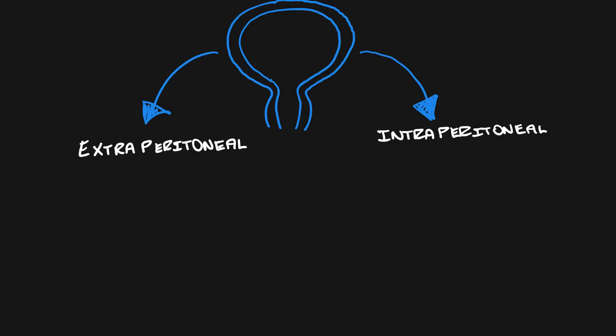The patient would present in quite a similar way, so it would be a trauma patient complaining of suprapubic pain, possibly with hematuria or difficulty in voiding or pain on voiding. There are some key differences between the two types of bladder rupture, and it's important to differentiate them because the management is different for each of these conditions.